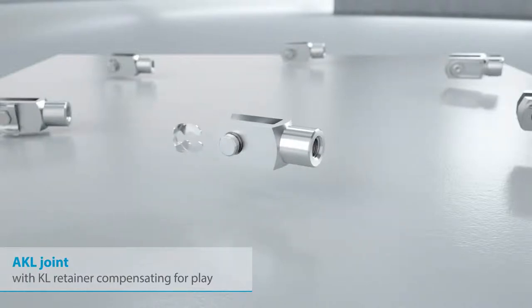AKL joint consists of a clevis, a bolt with groove, and a KL retainer in order to fix the bolt in place. It's possible to mount the KL retainer either with or without a tool. In addition, the AKL joint can very easily be disassembled into its individual component parts. The KL retainer compensates for play.